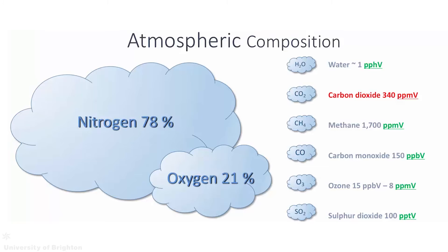Here, PPMV refers to parts per million, PPBV to parts per billion, and PPTV to parts per trillion — a very small quantity.